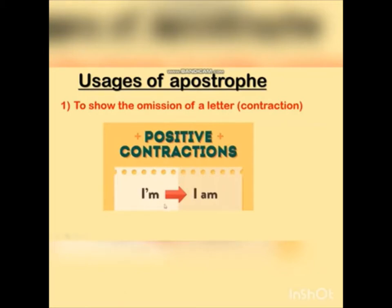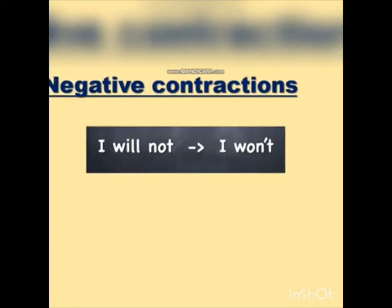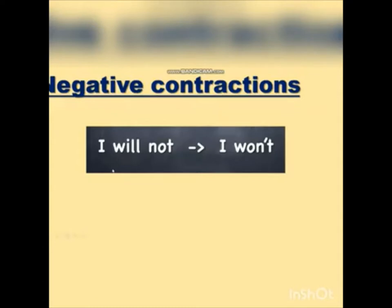Now let's see how to show the omission of letters in negative contractions. Here is an example: 'I will not.' We want to write 'will not' in a short way using the apostrophe mark, so we can write it as 'won't' — W, O, N, apostrophe, T.